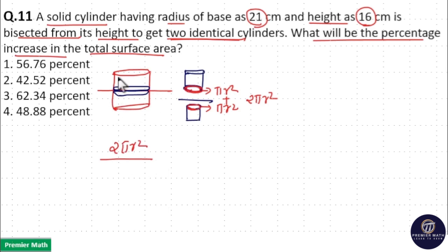Total surface area of cylinder is equal to 2πr into r plus h. Now you can see 2πr and 2πr cancel, remaining is r by r plus h.